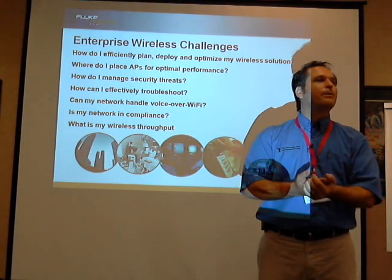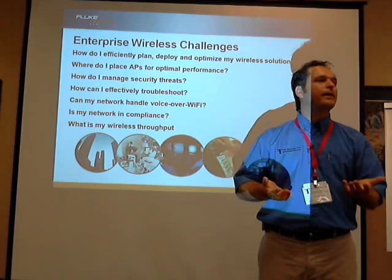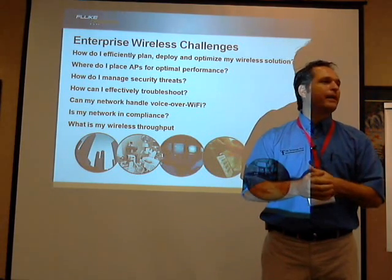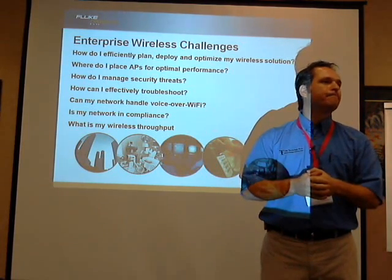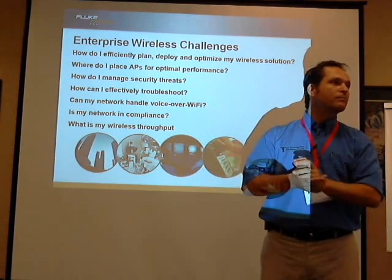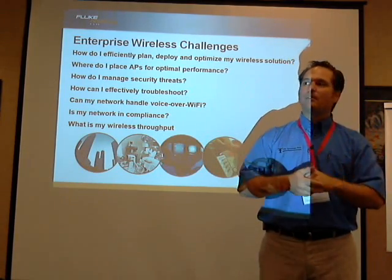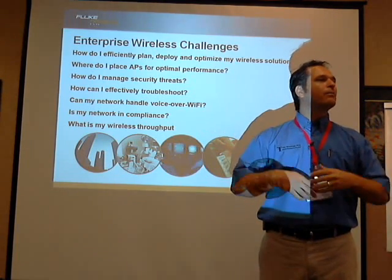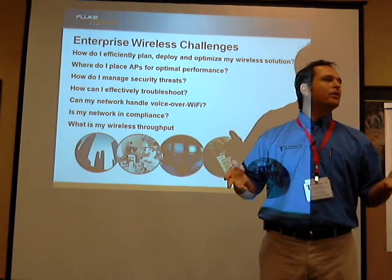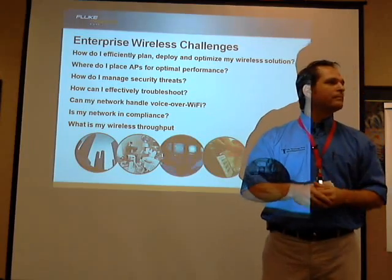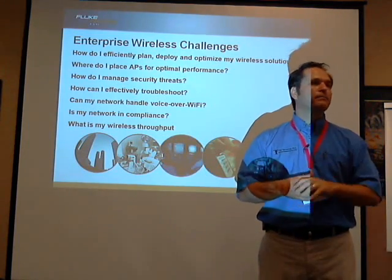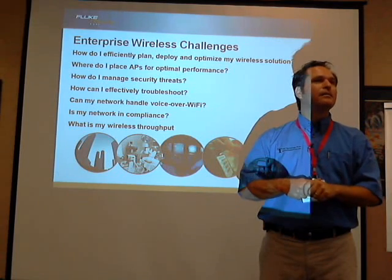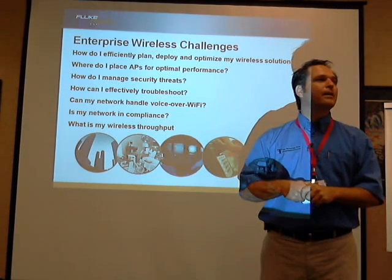Think about this: right now, let's assume everybody's got a piece of copper at their desk running at 100 meg full duplex. If I did a throughput test on 100 meg, what would I get? About 90 — 90, 99, 94 — it kind of depends, but around 90. So now I'm going to deploy wireless and you're going to get 20s, 10s — I've seen 2. How's that going to go over?